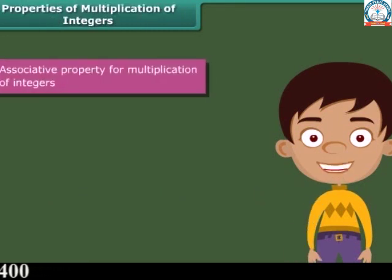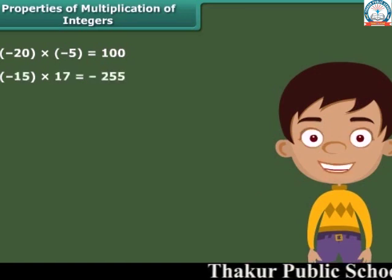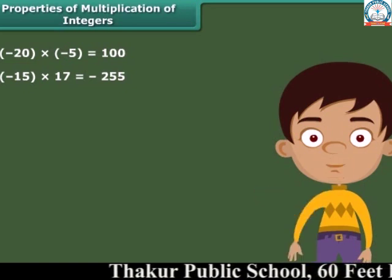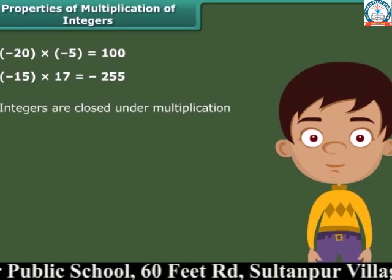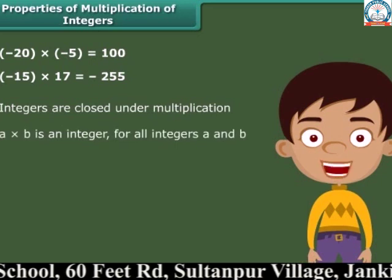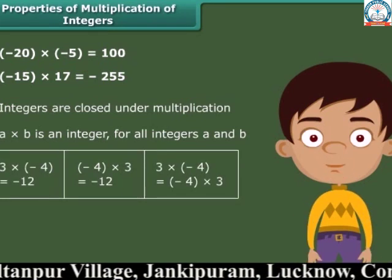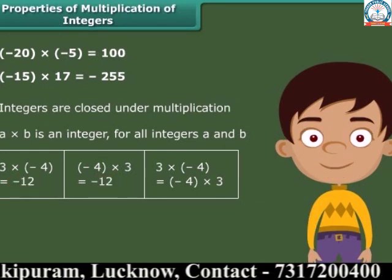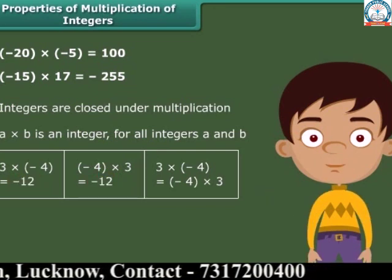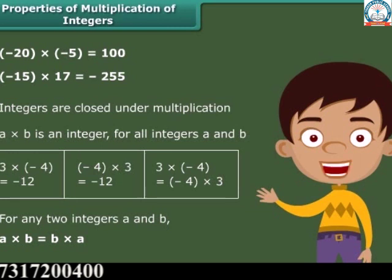The product of two integers is again an integer. For example, minus 20 times minus 5 equals 100, and minus 15 times 17 equals minus 255. So integers are closed under multiplication. In general, A times B is an integer for all integers A and B. Also, 3 times minus 4 equals minus 4 times 3, so multiplication is commutative for integers. In general, for any two integers A and B, A times B is equal to B times A.